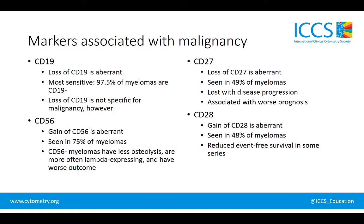Normal plasma cells express CD27, so like CD19, the loss of CD27 is an aberrant finding, seen in approximately half of myelomas. The loss of CD27 is associated with disease progression and therefore associated with a worse prognosis. With CD28, the gain of CD28 is an aberrant finding also seen in about half of myelomas, and CD28 expression is associated with a reduced event-free survival in some series.